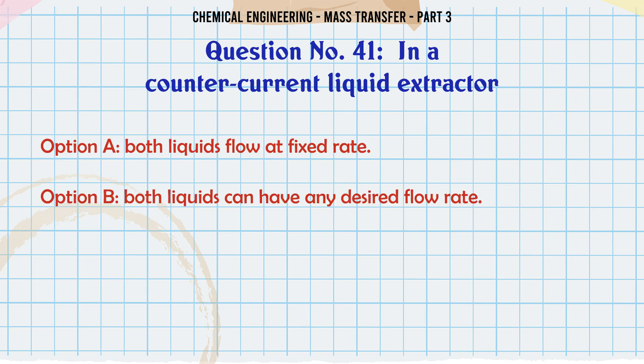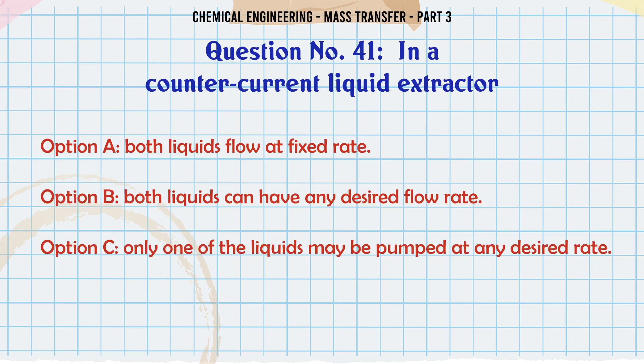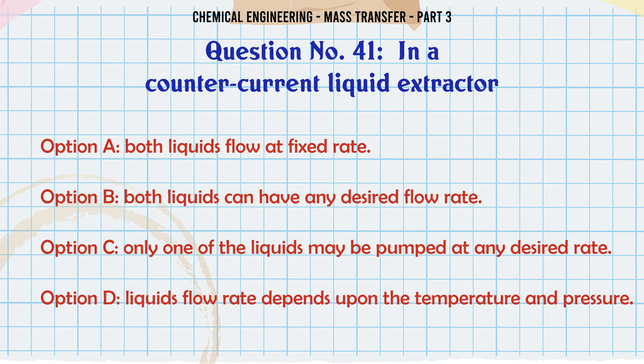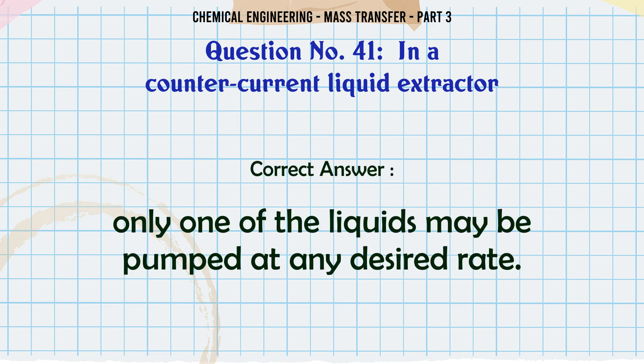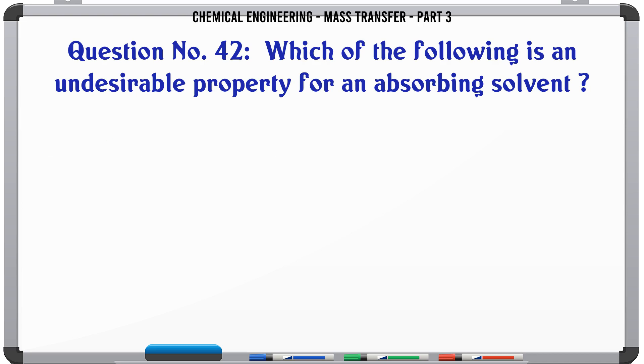In a counter-current liquid extractor: A) both liquids flow at fixed rate, B) both liquids can have any desired flow rate, C) only one of the liquids may be pumped at any desired rate, D) liquid flow rate depends upon temperature and pressure. The correct answer is: only one of the liquids may be pumped at any desired rate.